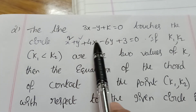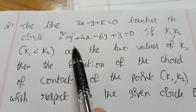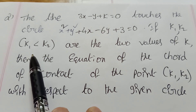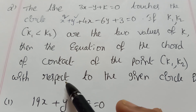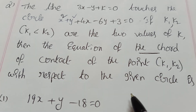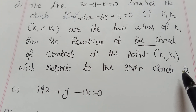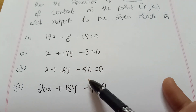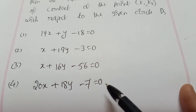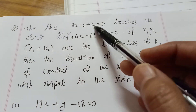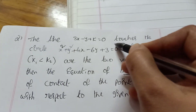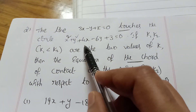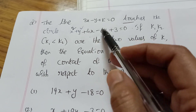Second question: the line 3x − y + k = 0 touches the circle x² + y² + 4x − 6y + 3 = 0. If k₁ < k₂ are the two values of k, then find the equation of the chord of contact of the point (k₁, k₂) with respect to the given circle. Options are given. Since the line touches the circle, the condition is r = d.